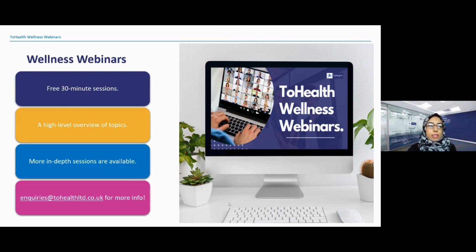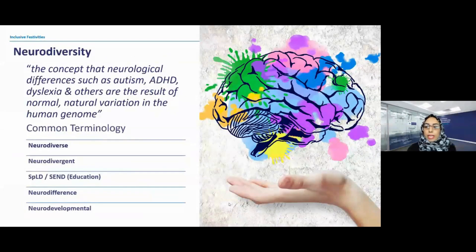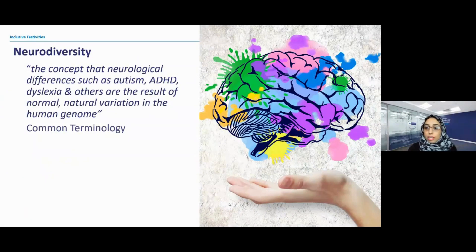So let's get started. I just want to start by defining what neurodiversity is. It is an umbrella term which aims to capture a number of learning and developmental difficulties, and it's defined as the concept that neurological differences such as autism, ADHD, dyslexia and others are the result of normal, natural variation in the human genome.